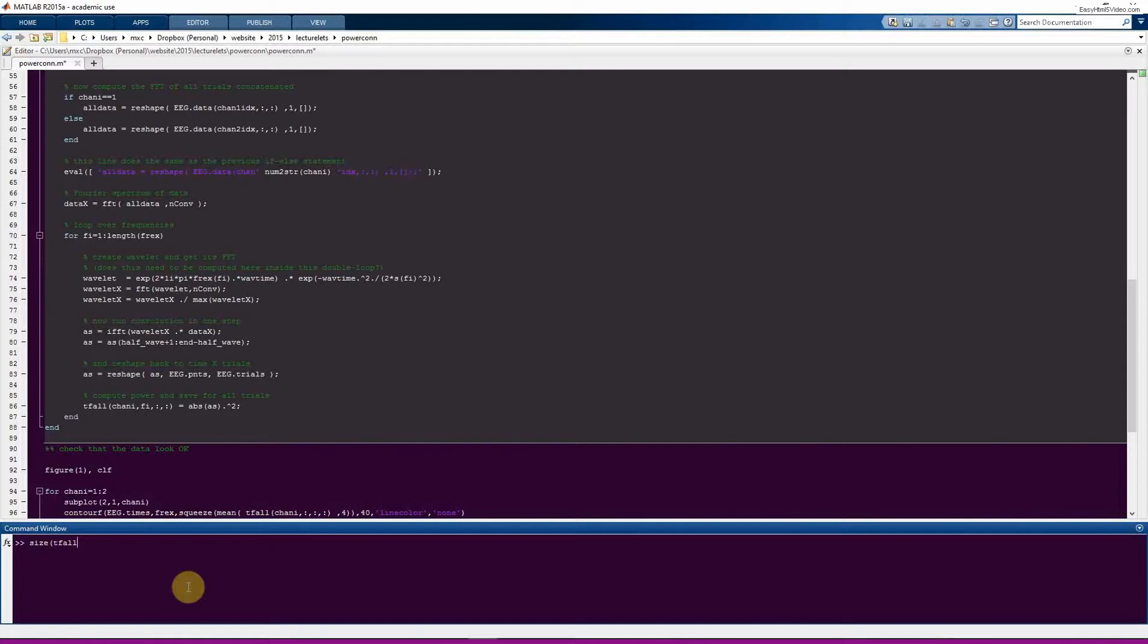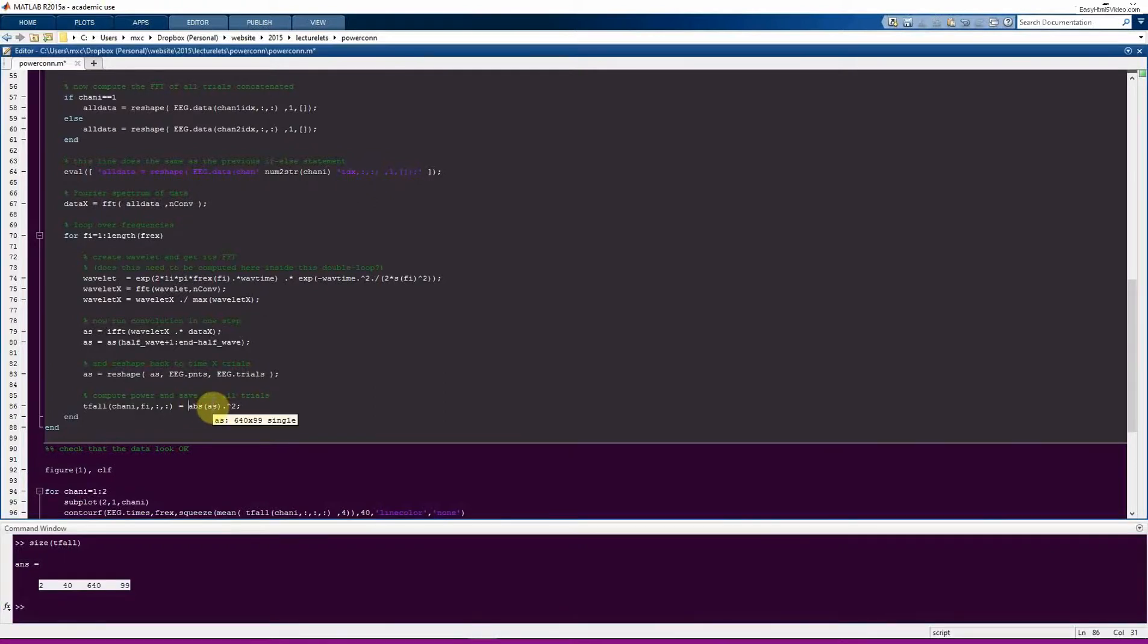So now we run the wavelet convolution. And here in this matrix TFL, this is a channel, so we have two channels, by frequencies, by time, by trials matrix. So you can see what really makes this code different from typical convolution code is that typically we have this variable AS analytic signal, which is time by trials. Typically what you would do is mean over trial. So you would take the average of trials like this. But here, of course, we need all the single trial data. So that's why we keep that.